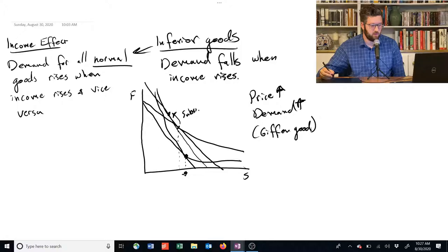The substitution effect is standard, we shift to consumption of more food and less shelter. But because this is an inferior good, when we now drop to a lower income,